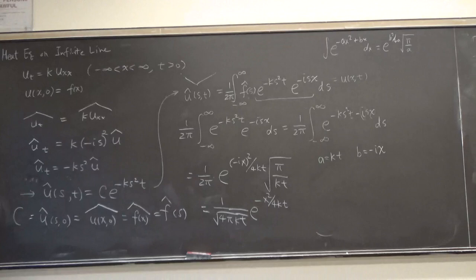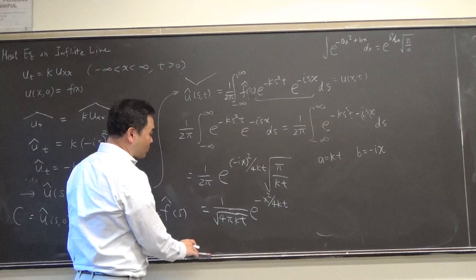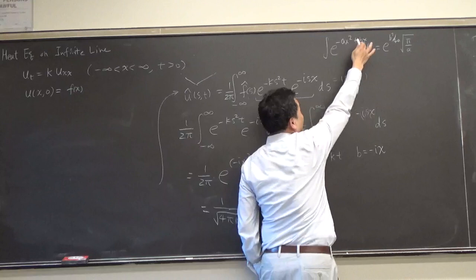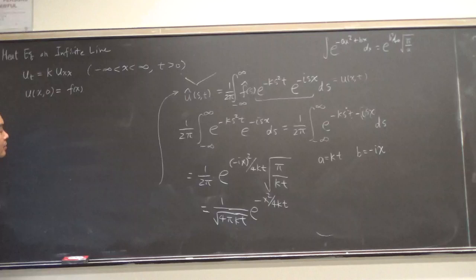Okay. And then you have this product and that's the result of the inverse transform. Is b i x? Yeah, b is i x. Because s's are variable, s is like the x here, b is negative i x. Oh, okay. Yeah. Okay.